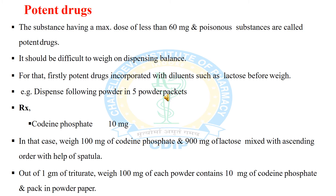The potent drug is reduced to fine powder and an equal quantity of diluent is mixed by thorough trituration in a mortar. The rest of the diluent is incorporated in successive proportion with trituration each time. One important point: the whole diluent should never be added to the drug at one time, otherwise the potent drug will not be mixed uniformly and thoroughly in the diluent.